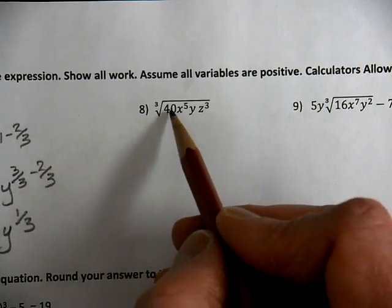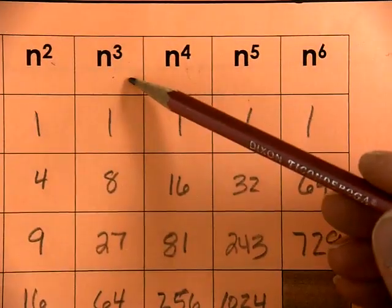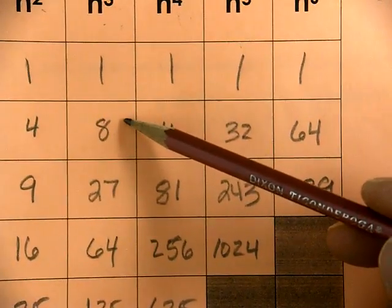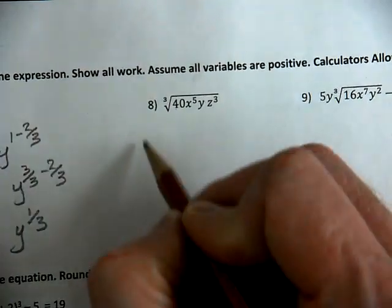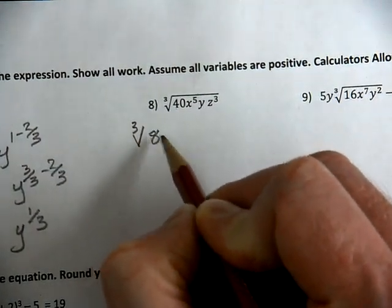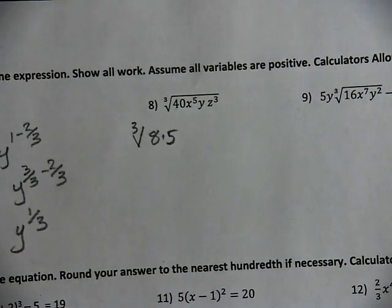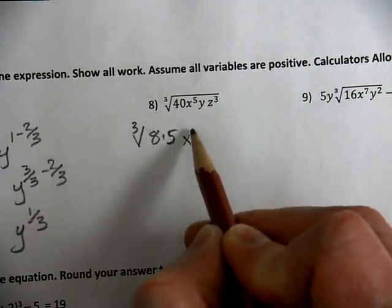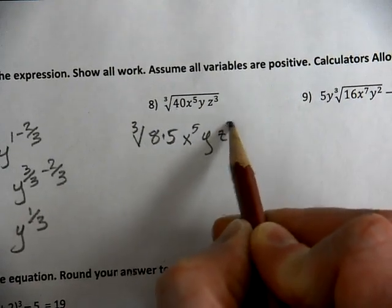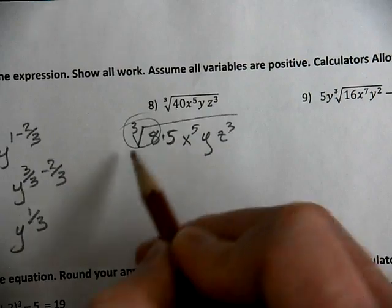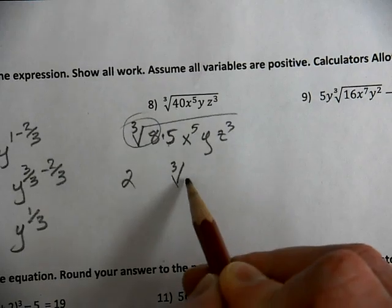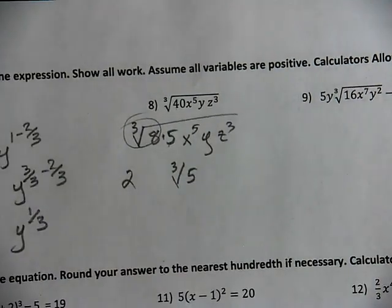The cubed root of 40. Which of these numbers goes into 40? I know 8 times 5 is 40, so I'm going to use the cube root of 8 times 5. I could use 4 times 10, I could use 2 times 20, but I have to keep breaking that down further. I know the cube root of 8, so that's a good one to use. I know the cube root of 8 is 2. I don't know the cube root of 5, so I'm going to leave that inside the radical.